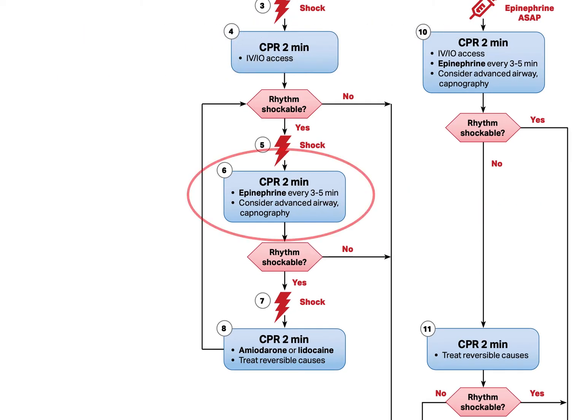If still in a shockable rhythm, in the next cycle we should administer 1.0 mg of epinephrine and consider an advanced airway, including a capnography assessment. Epi can be repeated every 3 to 5 minutes, but since we are doing 2-minute cycles, it makes perfect sense to simply give it every 4 minutes, which is every other cycle.